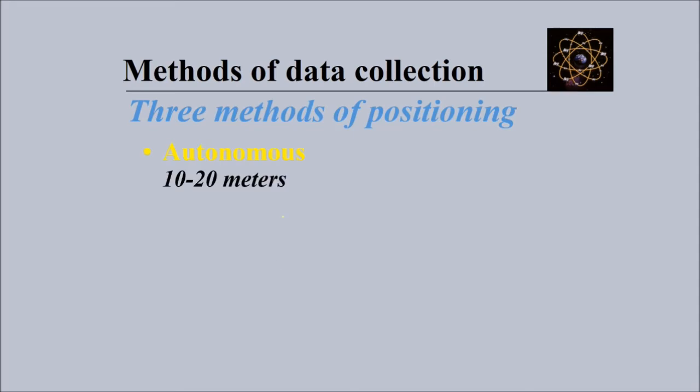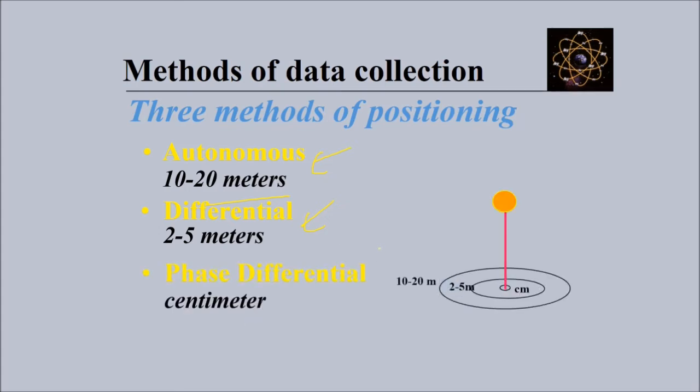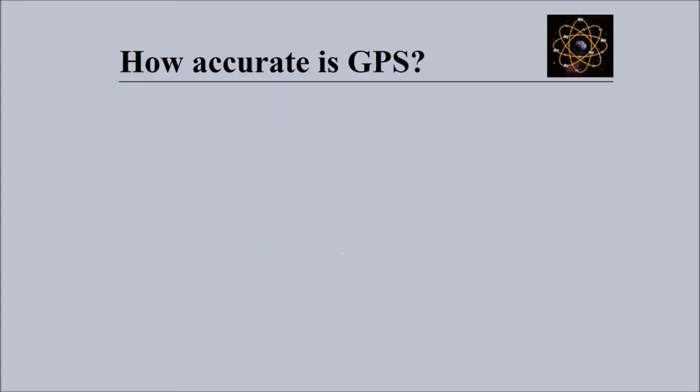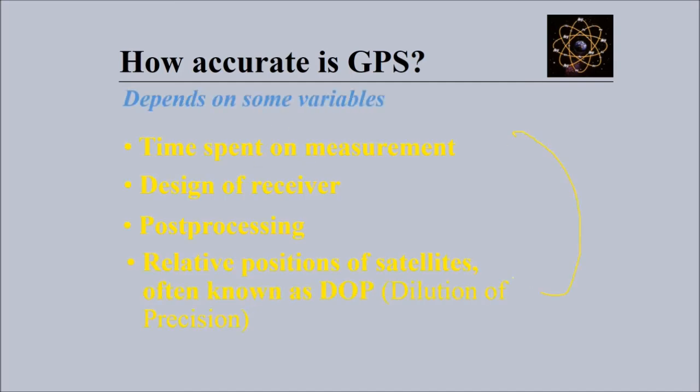There are three methods of positioning for data collection: autonomous can give you 10 to 20 meters of accuracy, differential GPS gives 2 to 5 meters, and if you use phase differential you can get accuracy up to the centimeter level.